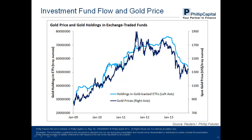Back to gold ETF fund flows. Investors have been pulling out funds from gold-backed ETFs since the beginning of 2013 — from 75.817 million troy ounces on January 3rd to 54.214 million troy ounces on October 29th. Year-to-date outflow totals 21.6 million troy ounces, or 672 tons, or 28.5%. The steepest decline coincided with the two large plunges in gold price in April and June, and there are signs of slowing outflow since mid-August.